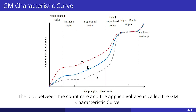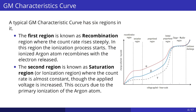The plot between the count rate and the applied voltage is called the GM characteristic curve. A typical GM characteristic curve has six regions. The first region is known as the recombination region, where the count rate rises steeply. In this region, the ionization process starts and the ionized argon atom recombines with the electron released.